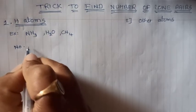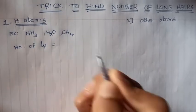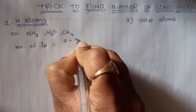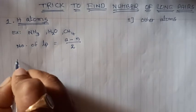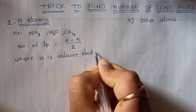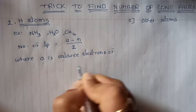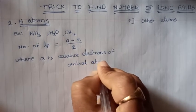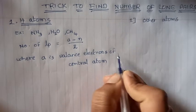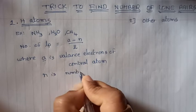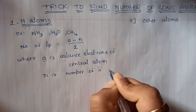For the first case, the formula to calculate the number of lone pairs is (A minus N) divided by 2. Here, A is the valence electrons of the central atom only — please note, we are taking only the central atom's valence electrons. And N is the number of hydrogen atoms.